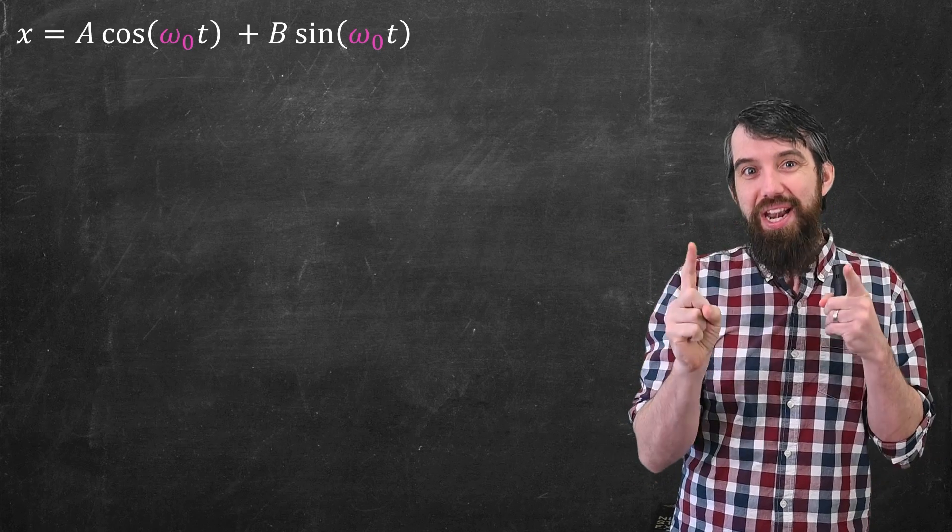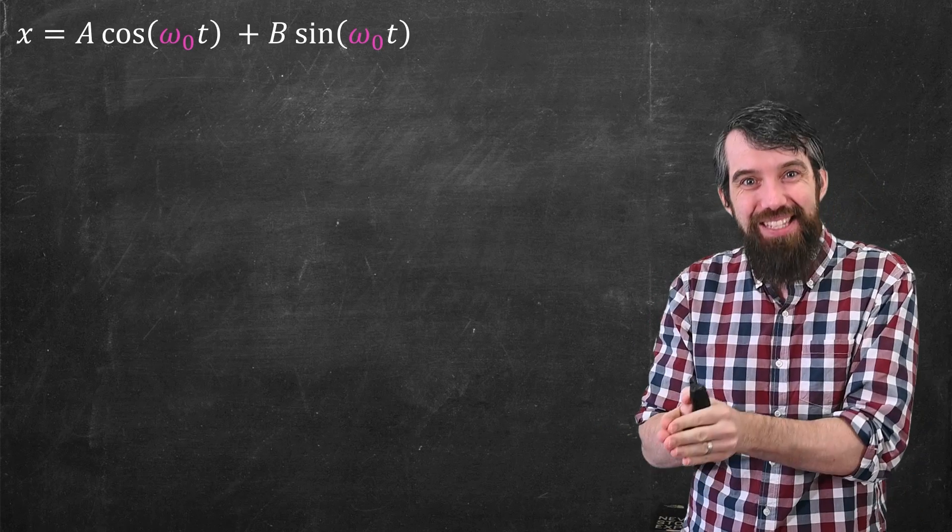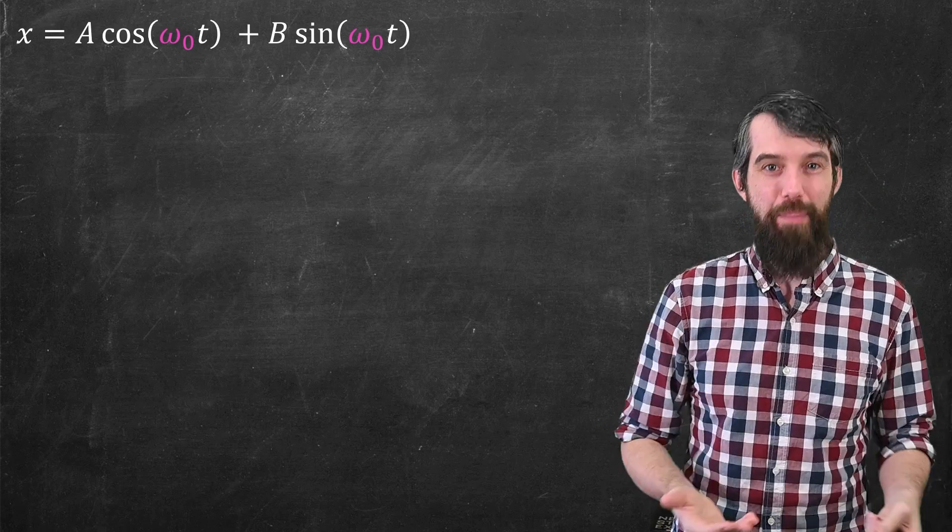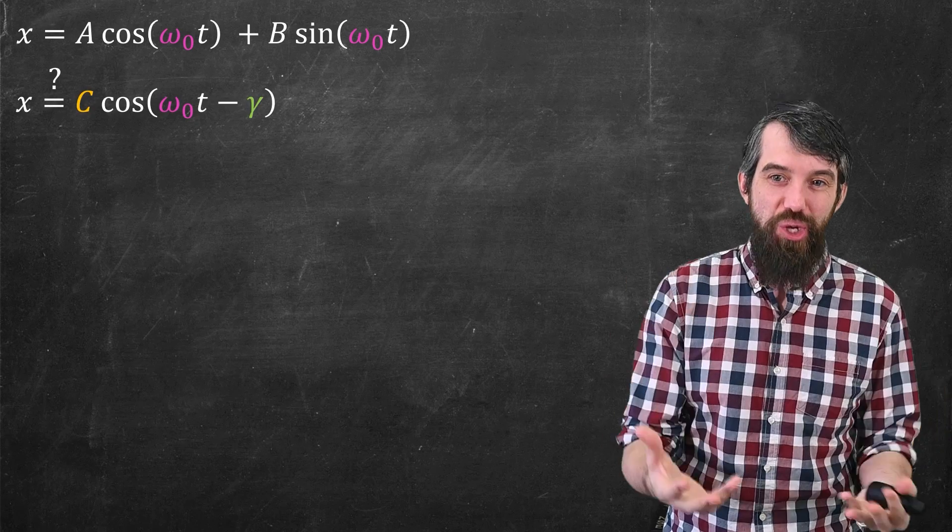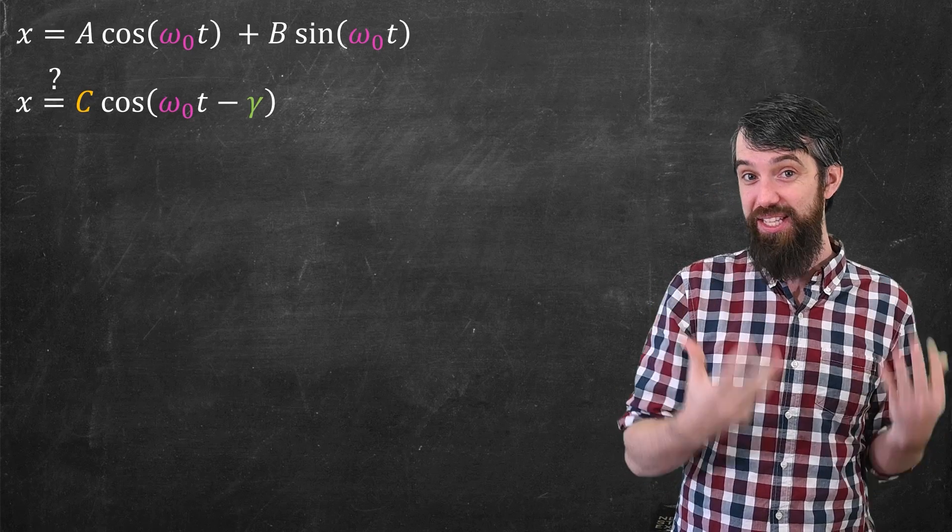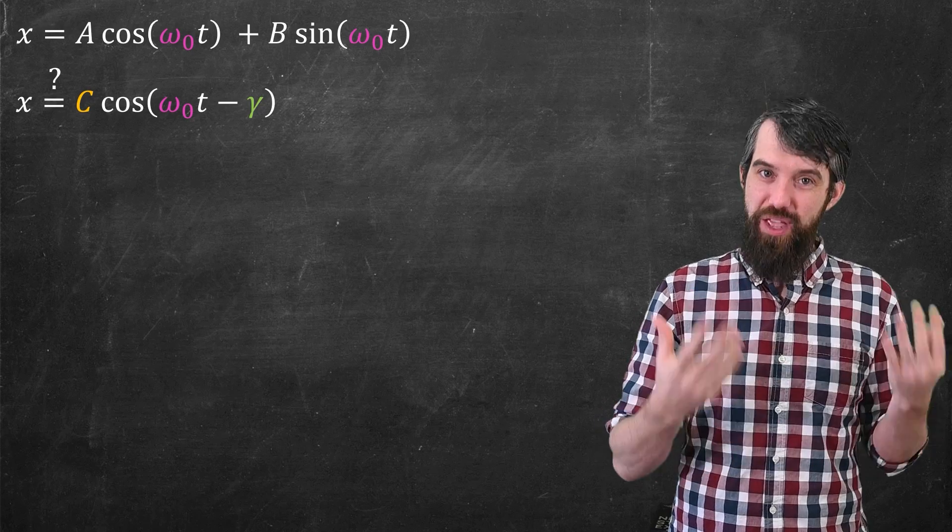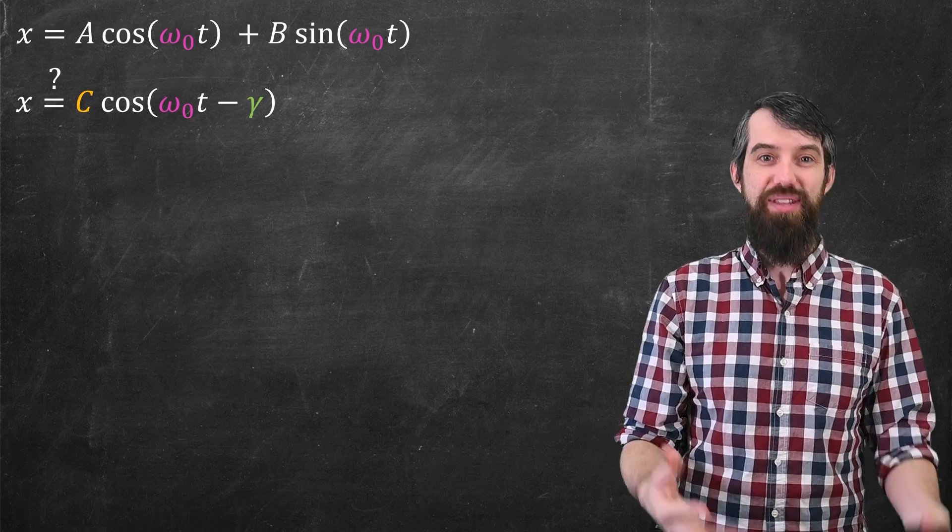But there's one other standard little trick that we do here, because having a cos and a sine is a little bit annoying. So I want to combine them. I'm going to see whether it's possible for me to write it in a new way, which is with only one trigonometric term, cosine. So I can have a new coefficient C out the front, and then I'm going to have the ω₀t, but then minus a γ.